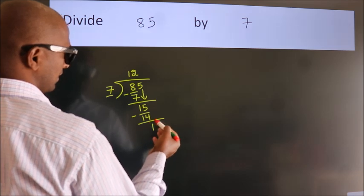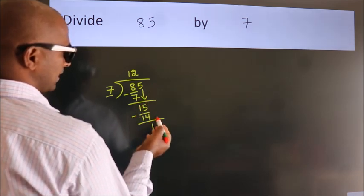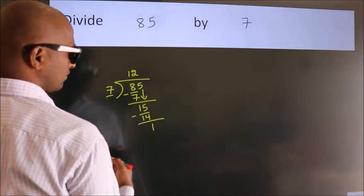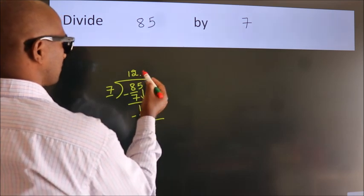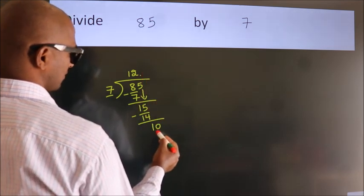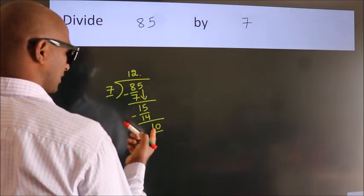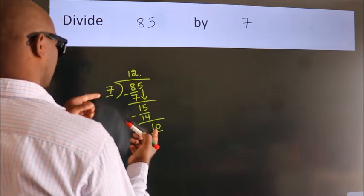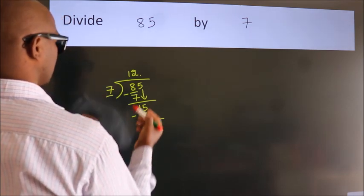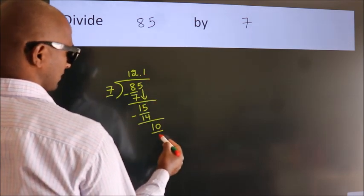After this, no more numbers to bring it down. So what we do is, we put dot, take 0. So, 10. A number close to 10 in the 7 table is 7 once 7.